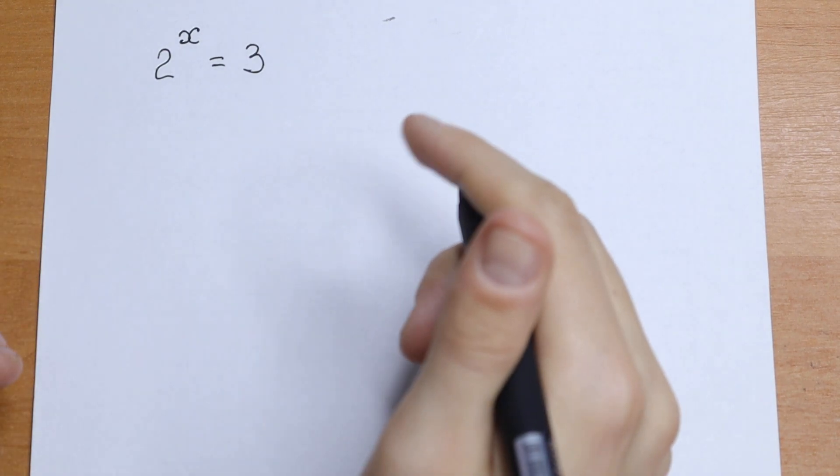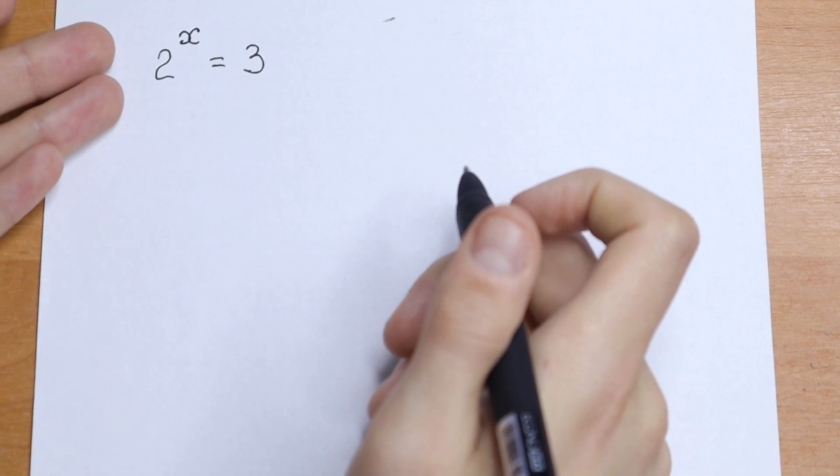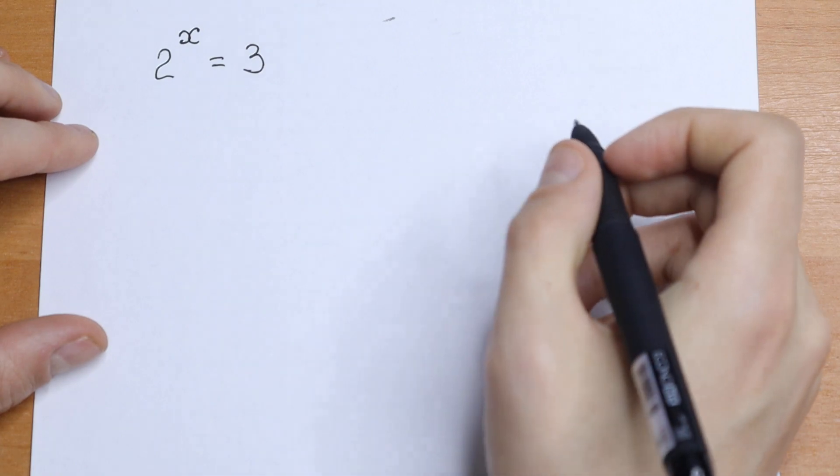Hello everyone! Interesting equation today. We have 2 to the power x equal to 3. Of course, we know logarithm. We can solve it easily with logarithm. Let's do this first.